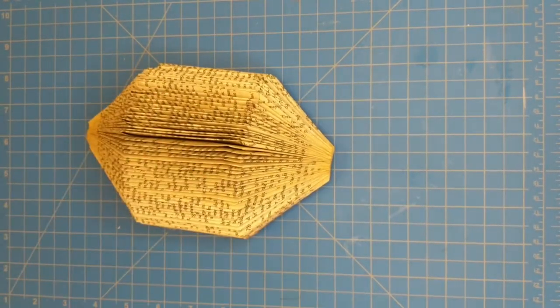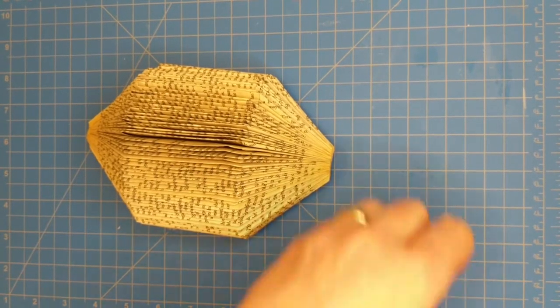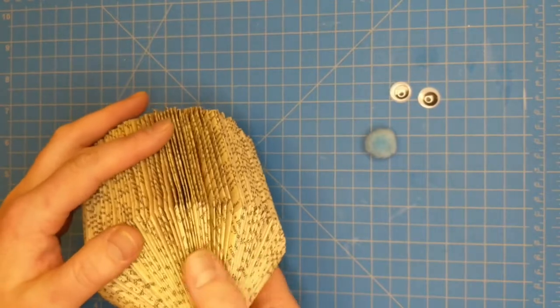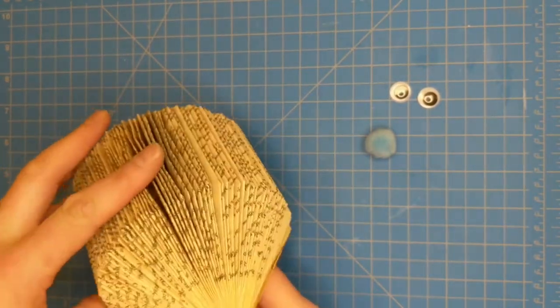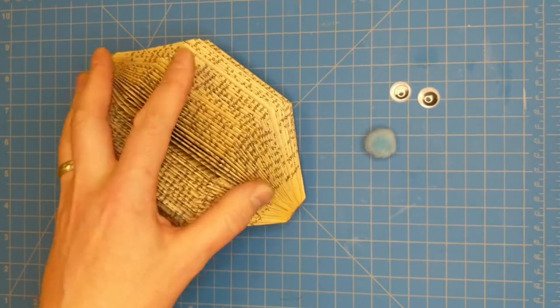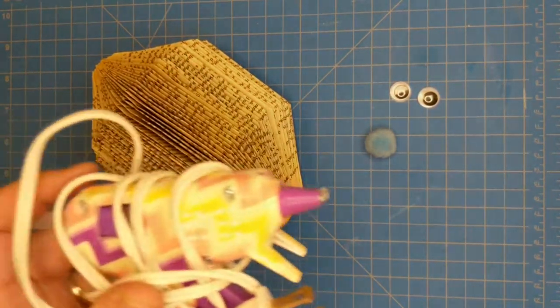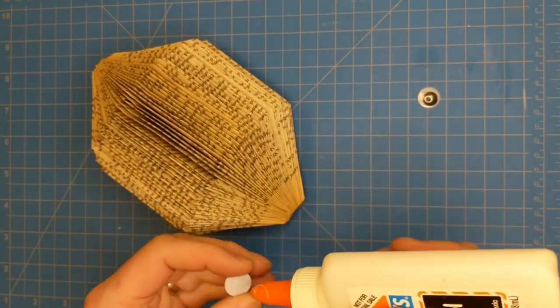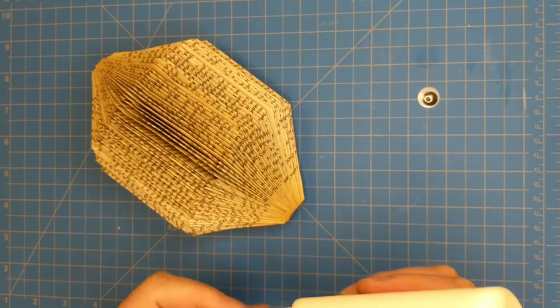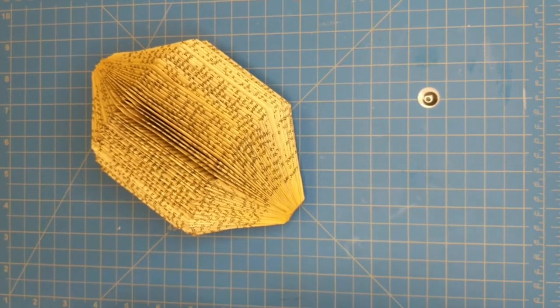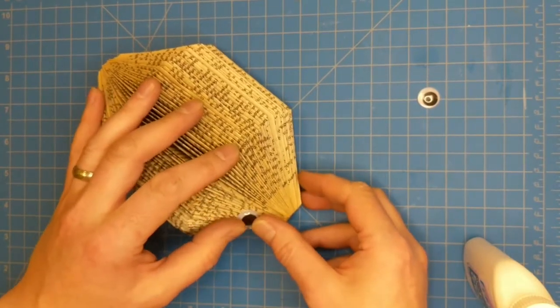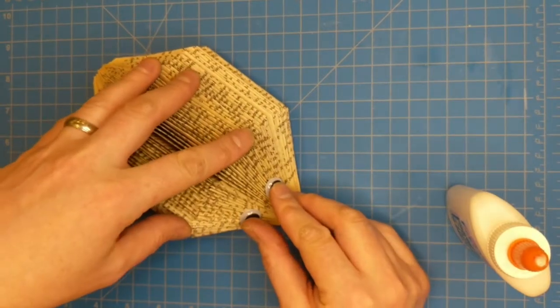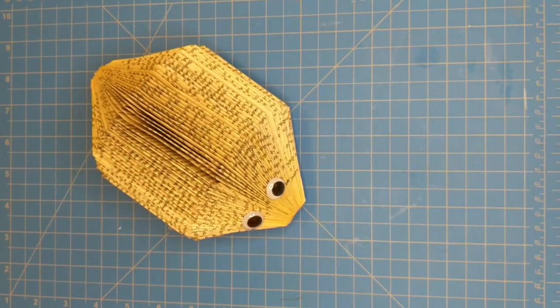Now to do the face, we're going to choose a side of our face that we like, this looks like the fullest. We'll use that side using either your glue gun or your white glue. Do your eyes where you like them. Let that dry.